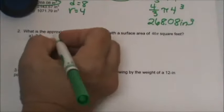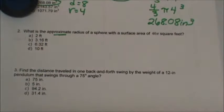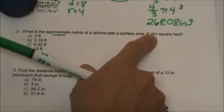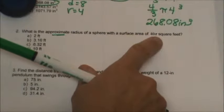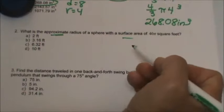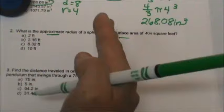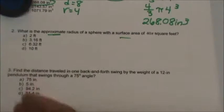What is the approximate radius of a sphere with a surface area of 40 pi? We are going to have to do some dividing with pi. They are giving us the surface area and want us to find the radius, so we are going from area backwards to just the linear measurement.